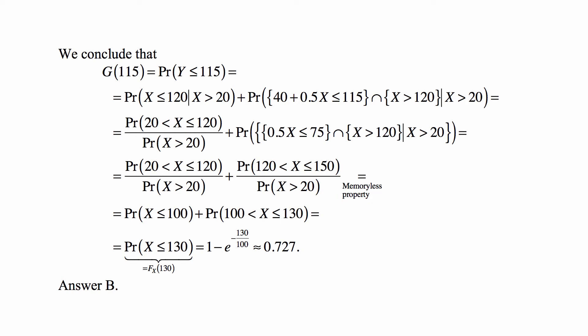We are looking for the cumulative distribution function of y at 115 — that's the probability that y is less than or equal to 115. We take the two cases separately: when x is less than or equal to 120 and when x is greater than 120. When x is less than or equal to 120, y is always less than 115, so the contribution is the probability that x is less than or equal to 120, given that x is more than 20. The second case is when the expression for y — which is 40 plus 0.5x — is less than or equal to 115, and x is greater than 120, given that x is more than 20.